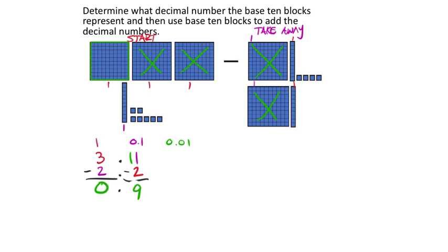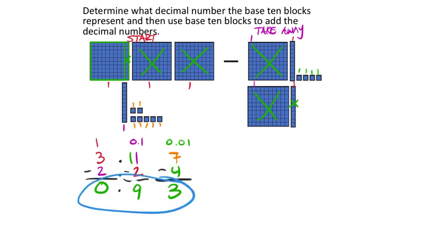One tenth zeros out with one of the two tenths being subtracted, and we're left with just 9 tenths. Then for the hundredths: we start with 1, 2, 3, 4, 5, 6, 7 hundredths. We take away 1, 2, 3, 4. Since 7 minus 4 is enough, no borrowing needed. Seven minus four hundredths leaves us with 3 hundredths. Taking away those 4 leaves us with 3 remaining.